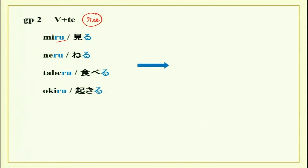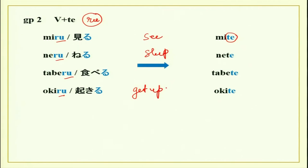Group two te form is very simple — you just need to remove the ru from the verb and add te. So miru meaning to see becomes mite, neru meaning to sleep becomes nete, taberu you already know, and okiru meaning to get up or wake up — this ru changes to te form.